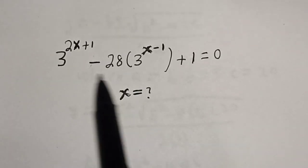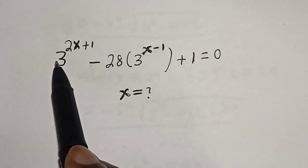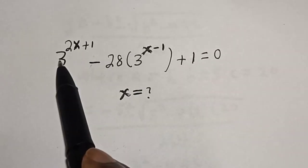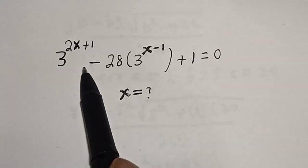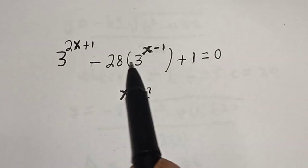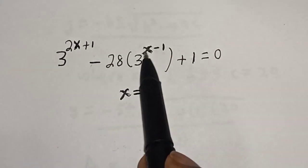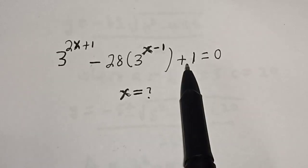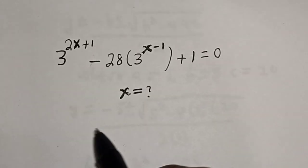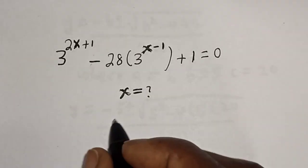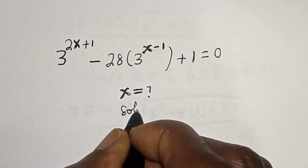Hello, welcome to Mages. In this class we want to find the value of s from this equation: 3 raised to power 2s+1 minus 28 bracket 3 raised to power s minus 1 plus 1 is equal to 0.